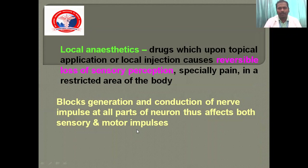Local anaesthetics are agents which upon topical application or local injection cause reversible loss of perception, especially pain in a restricted area of the body. It blocks generation and conduction of nerve impulse at all parts of the neuron, thus affecting both sensory and motor impulses.